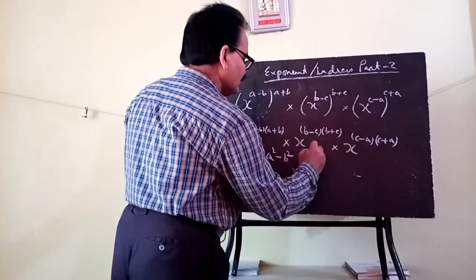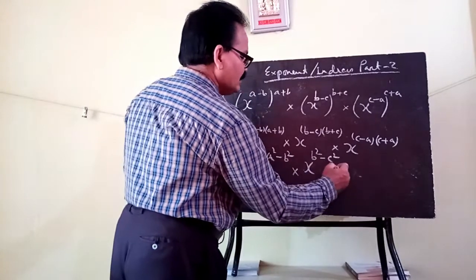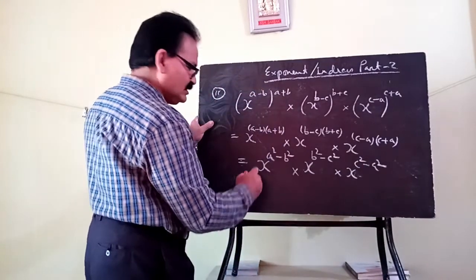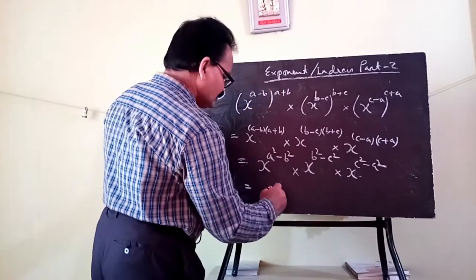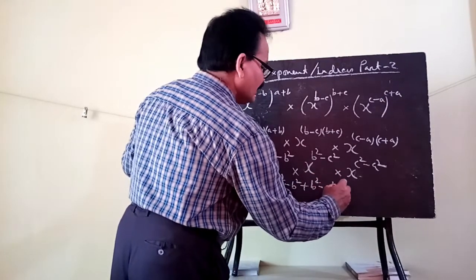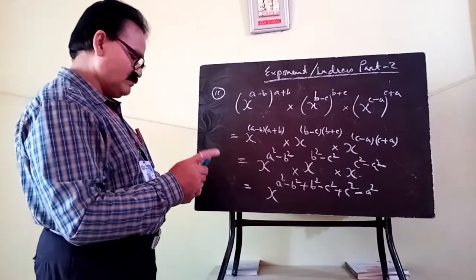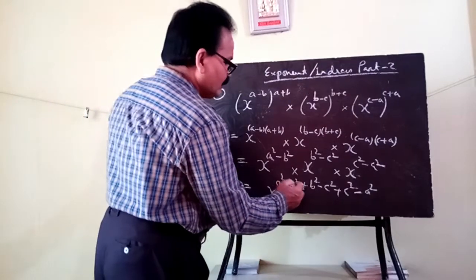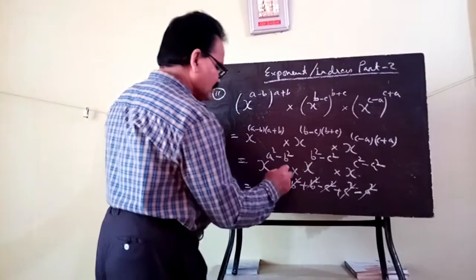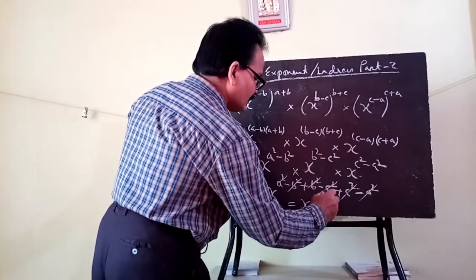Then x to the power b squared minus c squared, and x to the power c squared minus a squared. Since all have the same base, the powers are added: x to the power a squared minus b squared, plus b squared minus c squared, plus c squared minus a squared. The b squared terms cancel, the c squared terms cancel, and the a squared terms cancel, leaving x to the power 0, and the answer is 1.